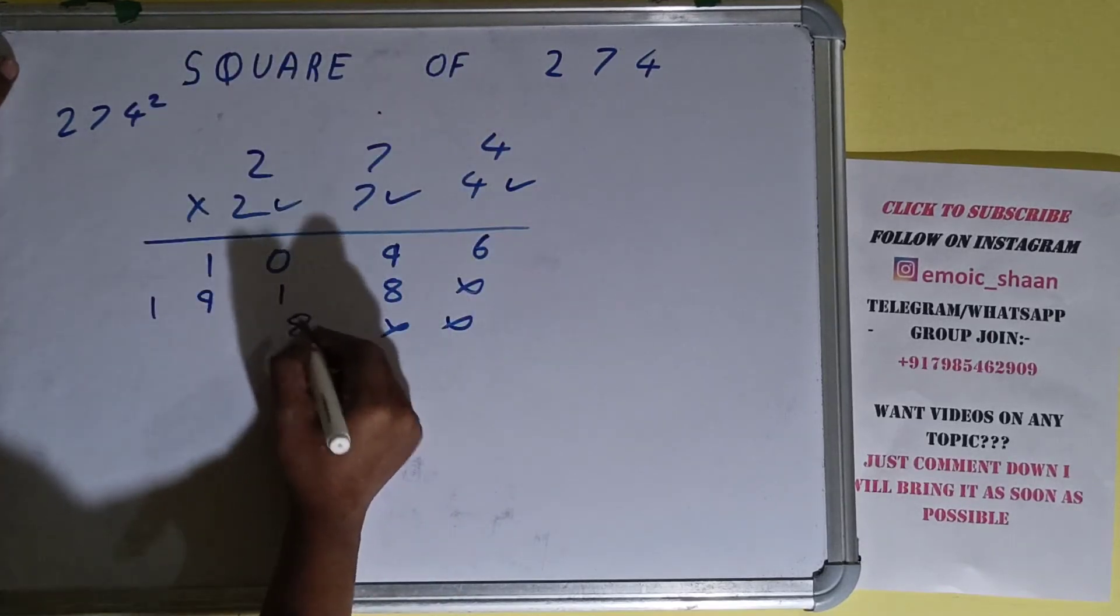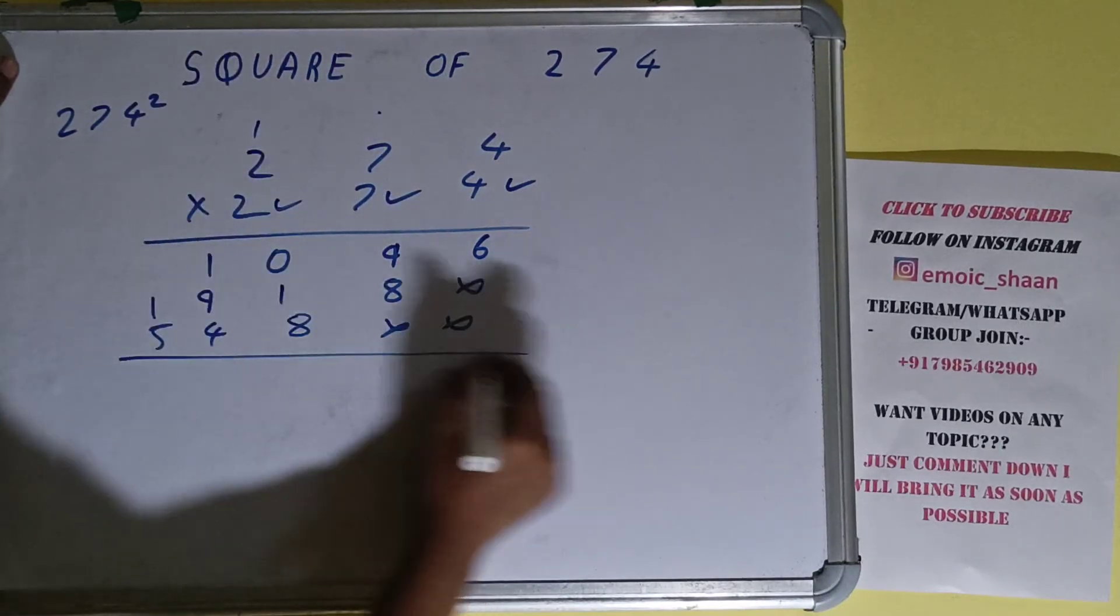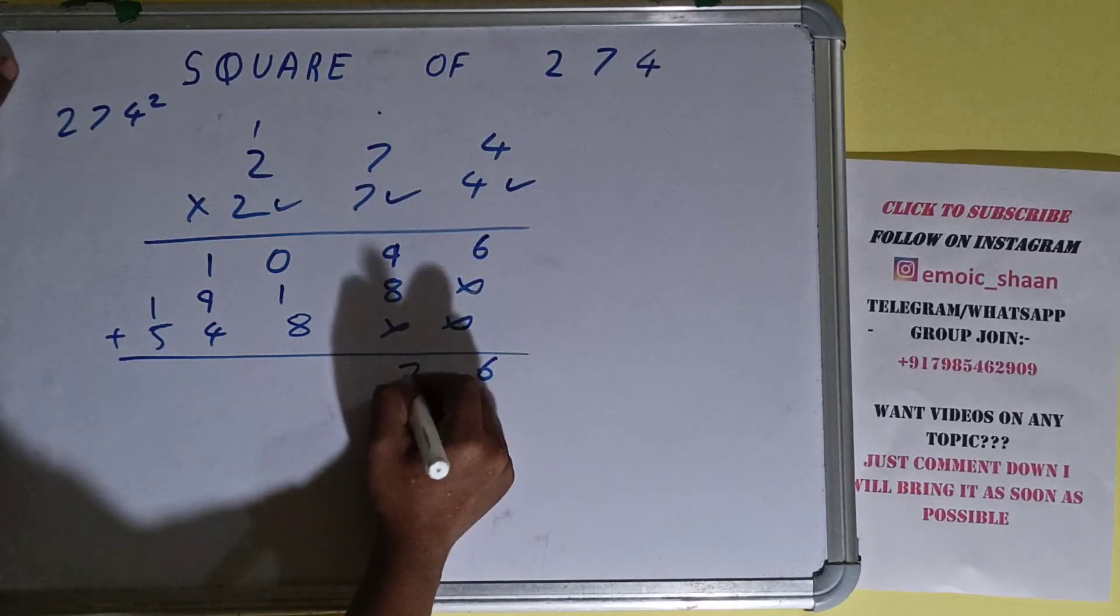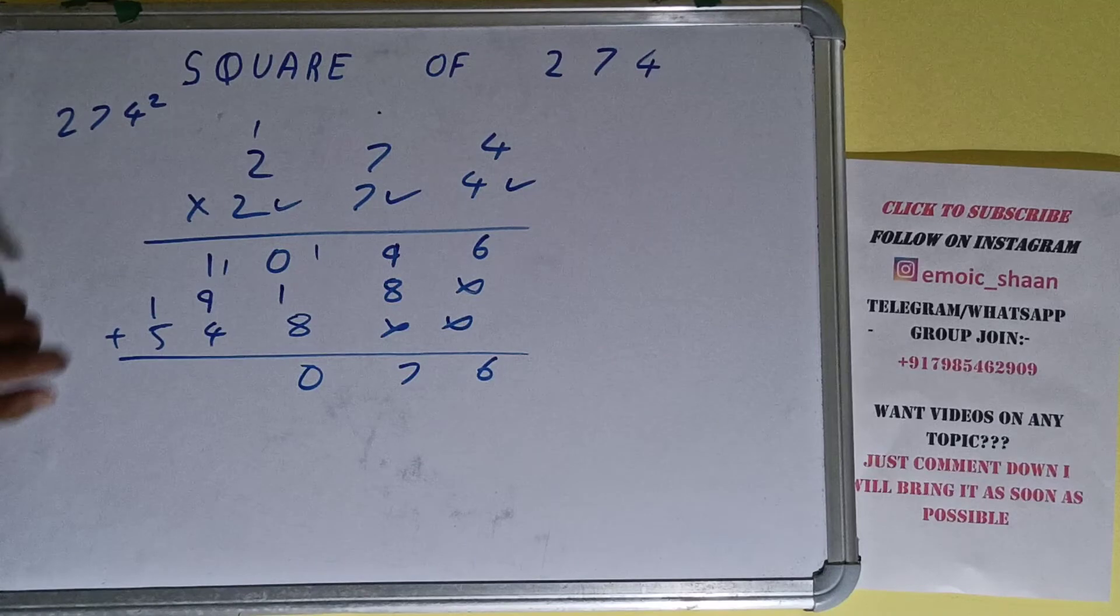Now this 2. 4 times 2 is 8. 7 times 2 is 14, 1 carry. 2 times 2 is 4 plus 1 is 5. Just add everything carefully. This will be 6, this will be 7, 1, this will be 0, 1, 10, 11, 4, 15, 7.